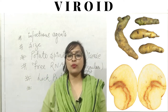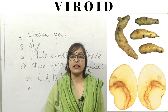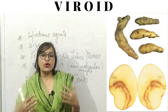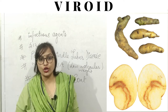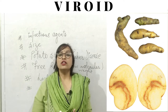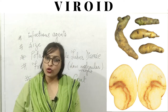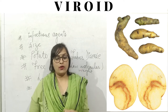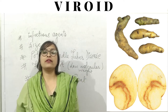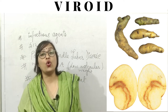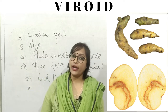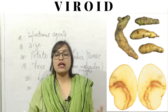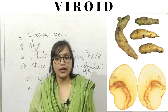Like viruses, potato spindle tuber viroids (PSTVs) take control of the host machinery to replicate their RNA genome. They start replicating their RNA genome by capturing the mechanism of the host cell. Unlike viruses, viroids do not have a protein coat to protect their genetic information - they lack a protein coat and are just infectious RNA particles.